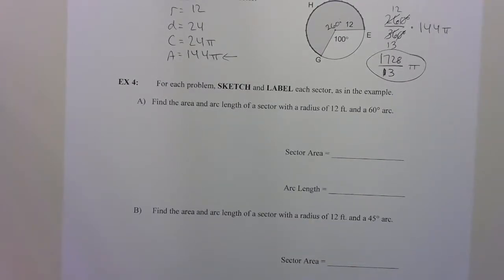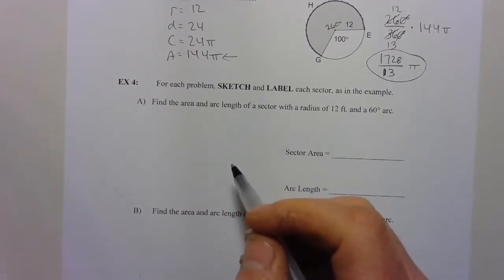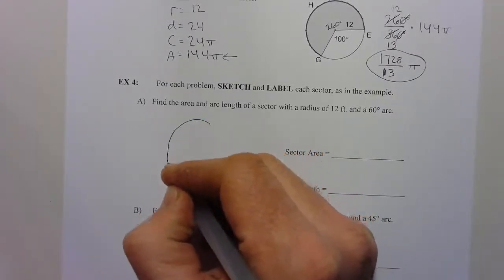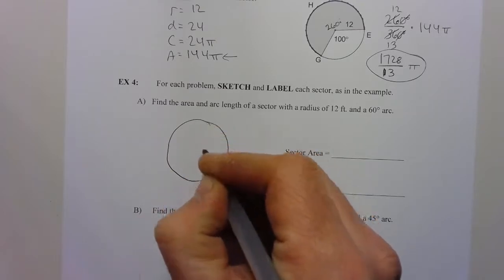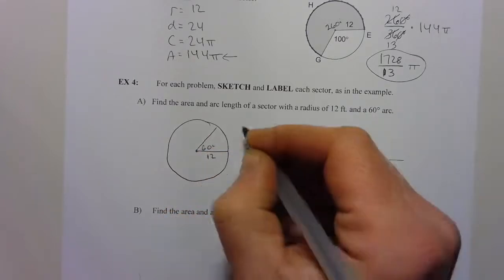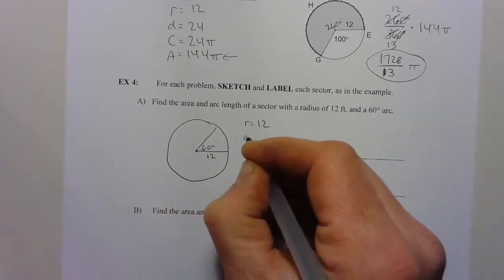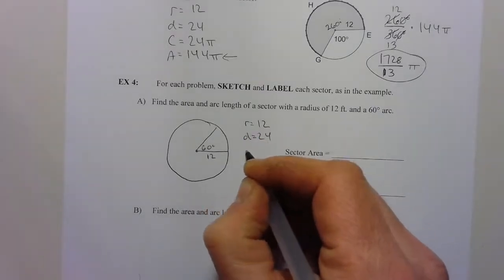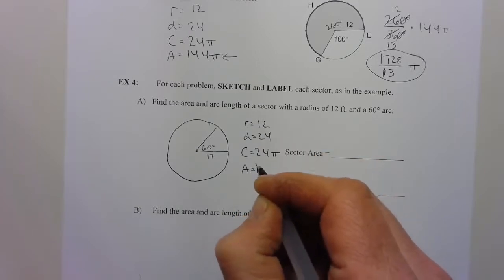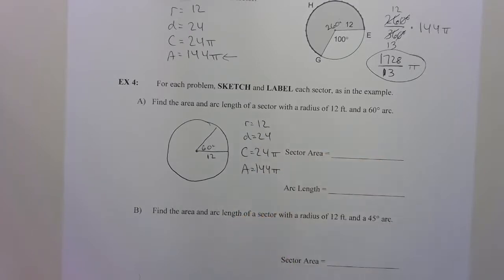Example four here. For each problem, sketch and label each sector, as in the example. Find the area and arc length of a sector with a radius of 12 and a 60-degree arc. So draw your circle. 60 degrees less than 90. And this is a radius of 12. Since the radius is 12, our diameter is 24. Circumference is 24 pi. And the area is 144 pi.